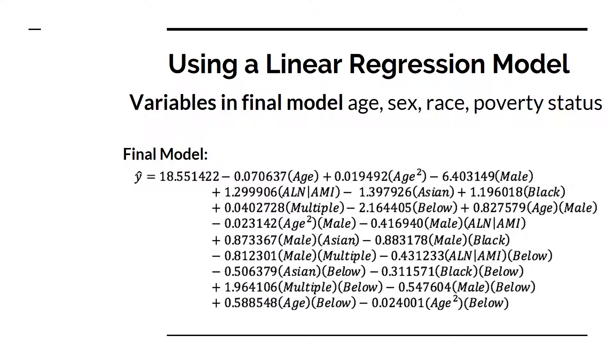In this model, y-hat is a predicted BMI. According to the results, about 9.24 percent of the variability in the predicted BMI can be explained by these variables, which means that 90% of the variability is explained by other variables such as genetics, activity level, or nutrition.